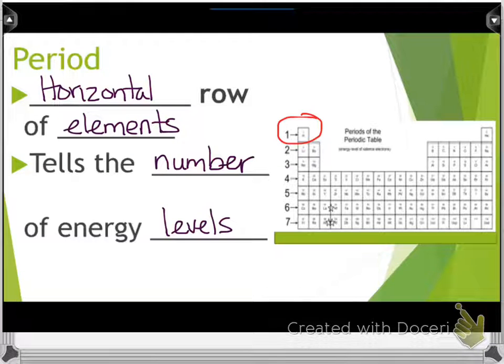This has one energy level. This horizontal period has three energy levels. This has four energy levels. So as you go down the period, this is three all the way across. There's three energy levels on that whole row, all the way across, which in this term is a period.